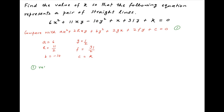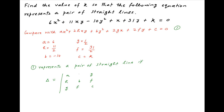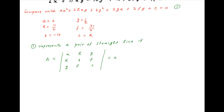Now this equation of a conic will represent a pair of straight lines if the determinant with rows (a, h, g), (h, b, f), and (g, f, c) is equal to 0.